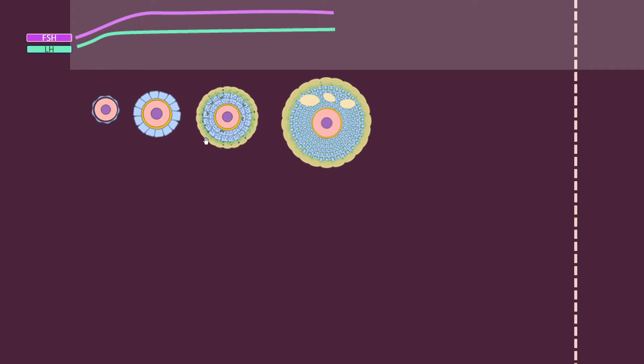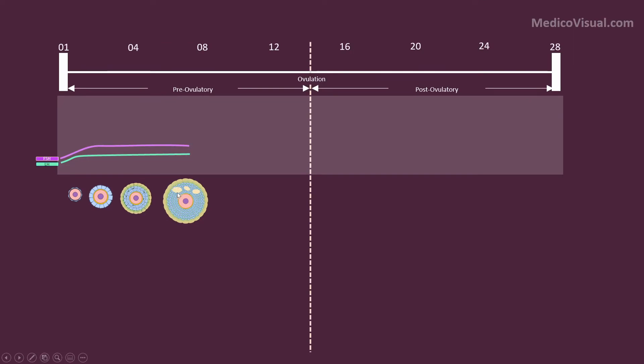These theca cells secrete testosterone that is converted by the granulosa cells into estrogen. There is formation of small fluid-filled cavities inside. As the follicles are growing, we call it the follicular phase of the ovarian cycle.